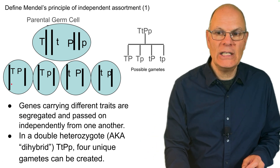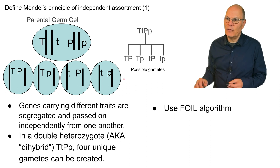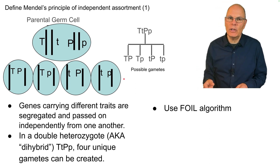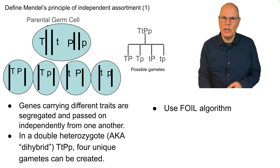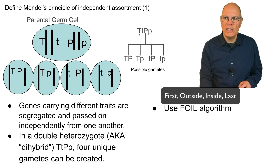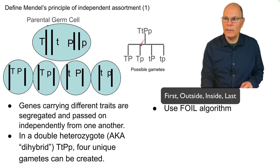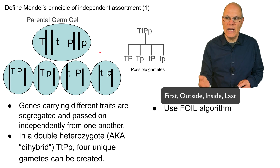The four gametes are: big T big P, big T little p, little t big P, and little t little p. You can figure this out using the FOIL algorithm — used for factoring binomials, which you should know from algebra. First, outside, inside, last: take the first combination big T big P, the outside big T little p, the inside little t big P, and the last little t little p. So four gametes can come from a dihybrid organism.